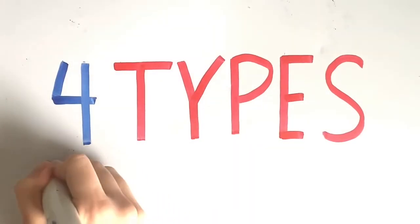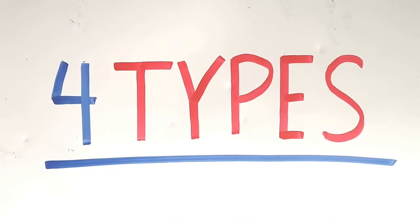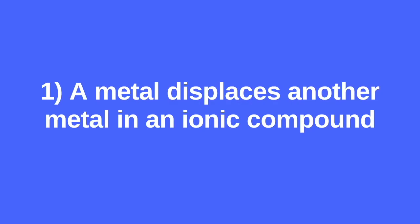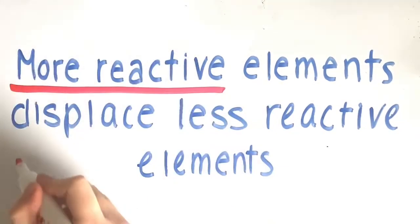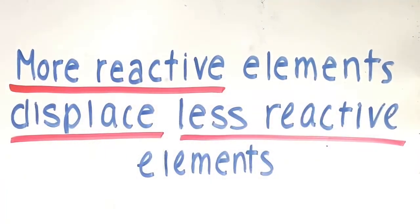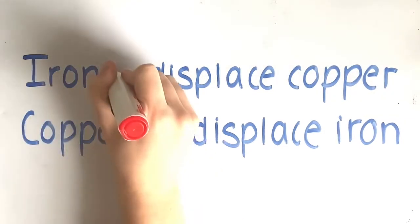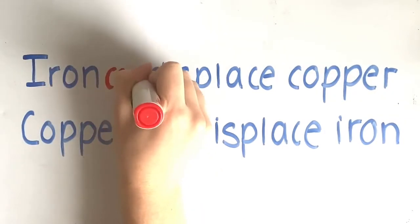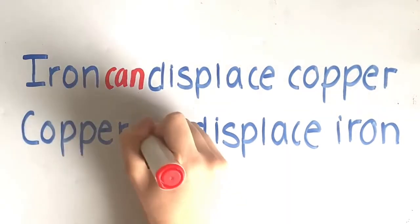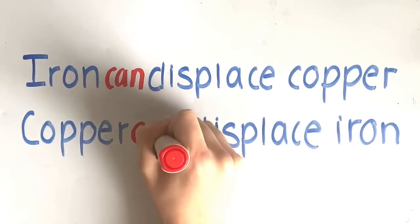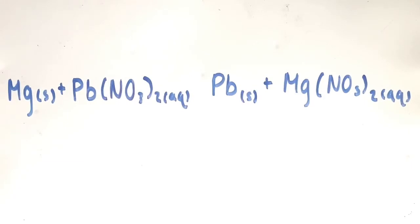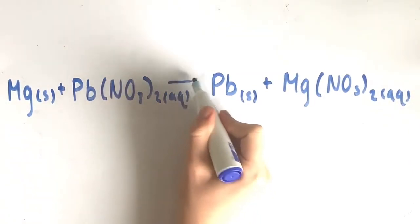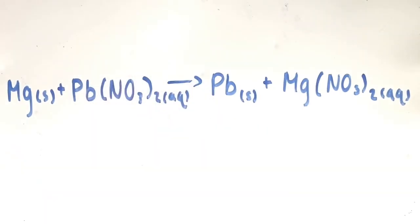There are four types of single displacement reactions. Firstly, we have a metal displacing another metal in an ionic compound. Only elements that are more reactive are able to displace elements that are less reactive. For example, iron can displace copper because iron is more reactive, but copper cannot displace iron. An example would be magnesium plus lead nitrate yields lead plus magnesium nitrate — magnesium took lead's place.